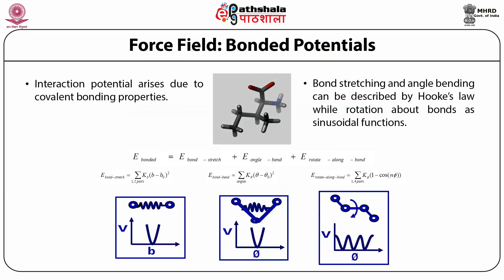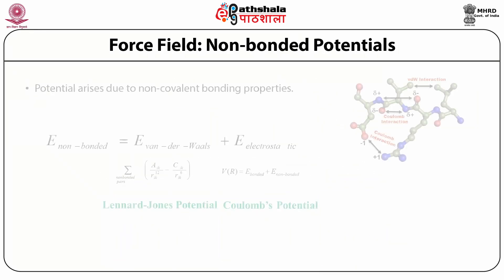Bonded potentials mainly include bond stretching, angle bending, and torsional potential. In a simulated molecule, we can see different types of events that happen continuously: bond stretching, angle bending, and rotation around single bonds (torsional part). Bond stretching and angle bending can be modeled based on Hooke's law, where the potential increases or decreases in a harmonic fashion. The rotation around a single bond or torsional potential can be represented by a wave-like cyclic function, where the potential reaches a maximum, then comes lower, and rises again in a wave-like pattern.